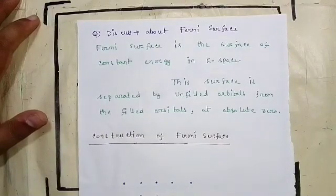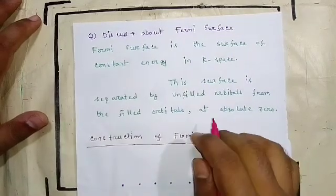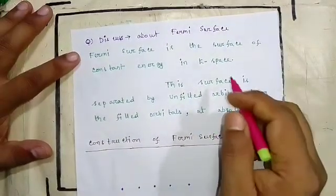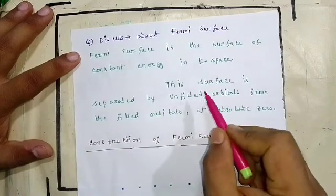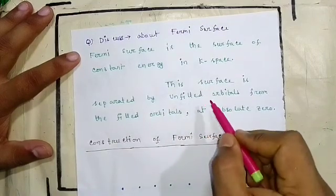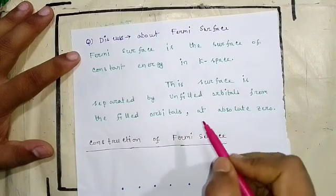Hi everyone, in this video I will discuss about Fermi surface. So what is Fermi surface? Fermi surface is the surface of constant energy in K space. This surface is separated by unfilled orbitals from the filled orbitals at absolute zero.